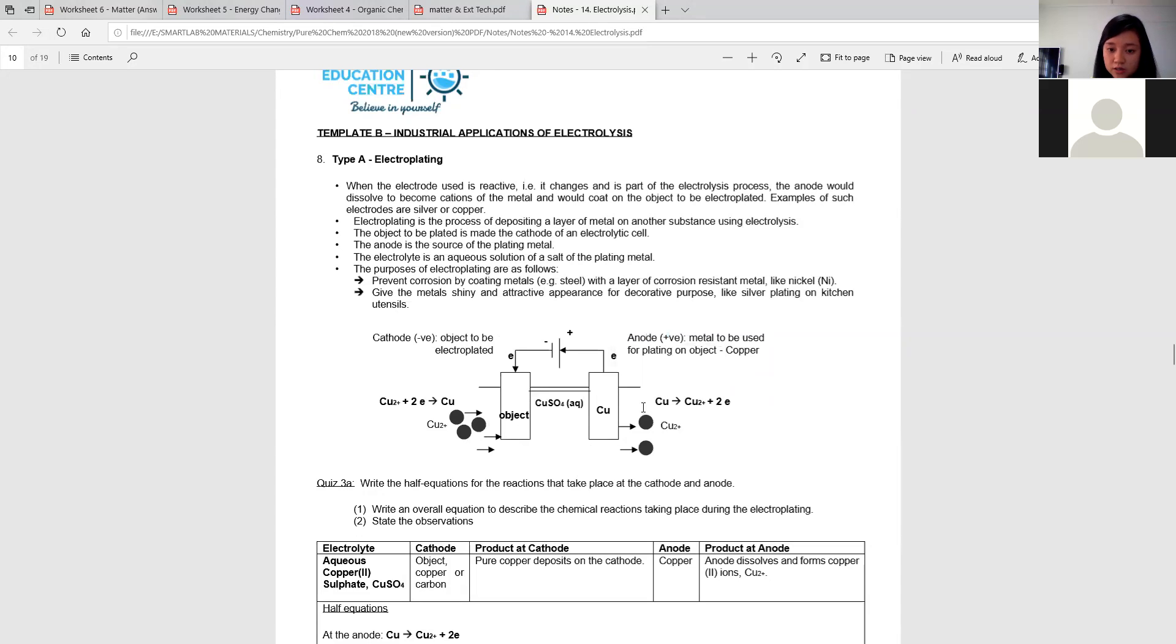So this half equation, if I got copper here, I want the copper to go over there. So this is anode, anode means it goes through oxidation, so it means my copper will be losing two electrons to give you Cu2+. So the copper will lose two electrons to give you copper 2+, then your solution-wise must already have copper.